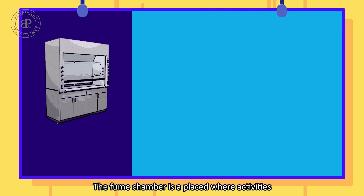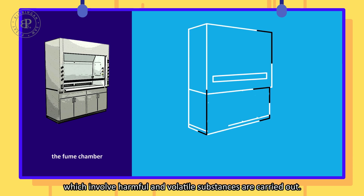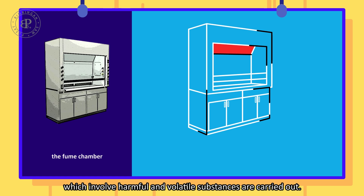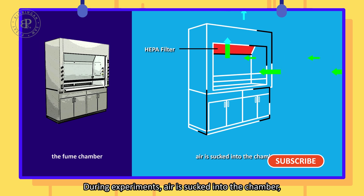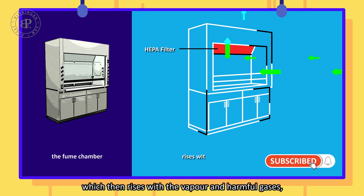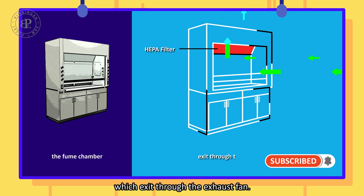The film chamber is a place where activities which involve harmful and volatile substances are carried out. During experiments, air is sucked into the chamber, which then rises with the vapour and harmful gases, which exit through the exhaust fan.